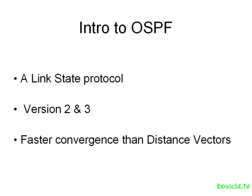OSPF, being a link state routing protocol, offers much better convergence times than your standard distance vector protocols. Quite simply, OSPF is better than RIP. It's a lot more complex, but it's also a lot more robust. Overall, we get a lot more benefits from OSPF in terms of performance, and that's what we want.